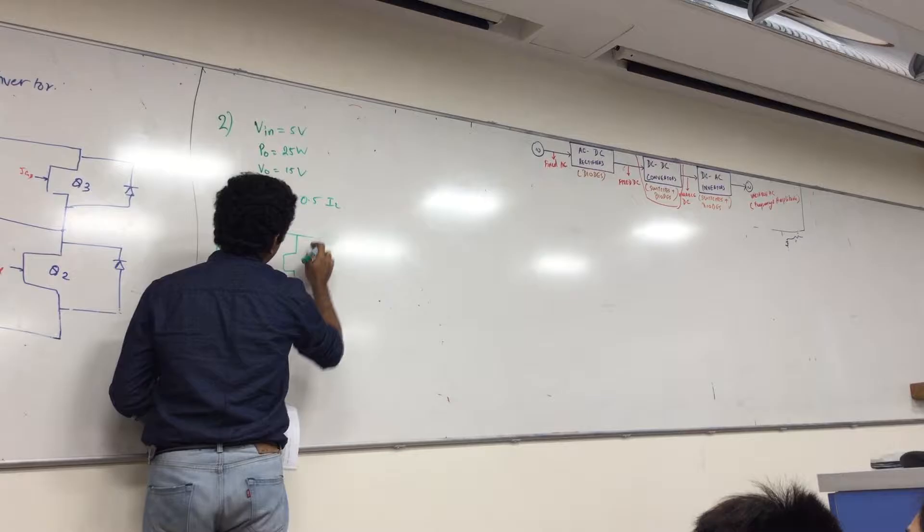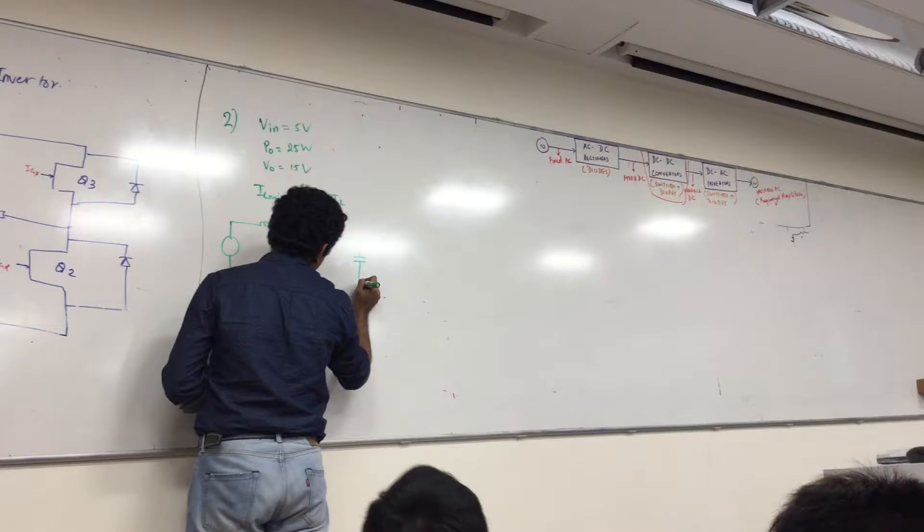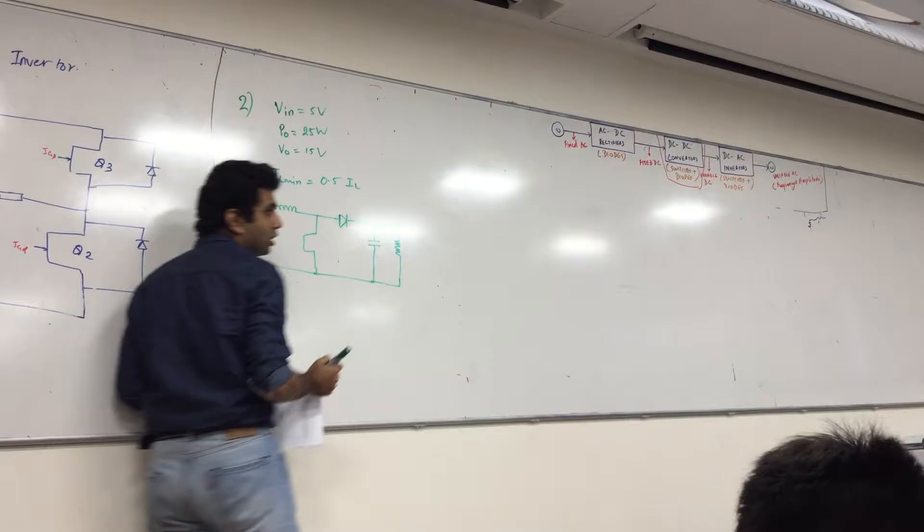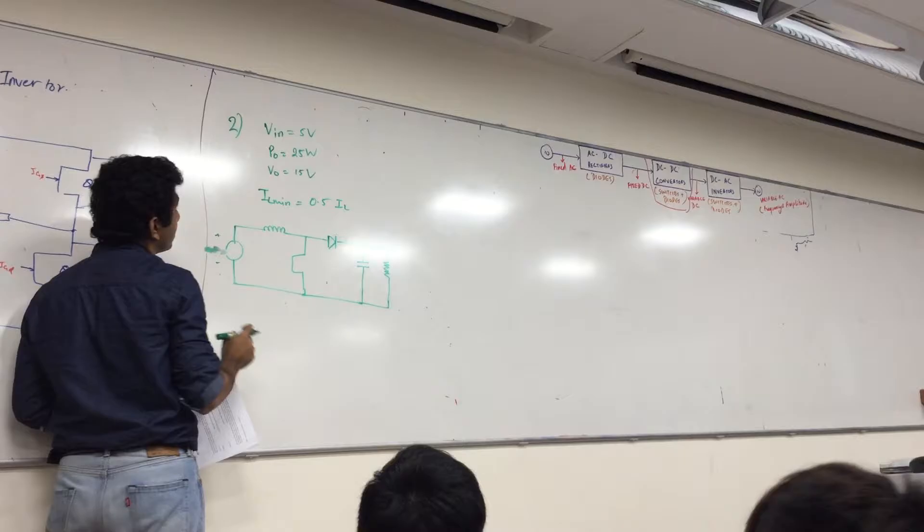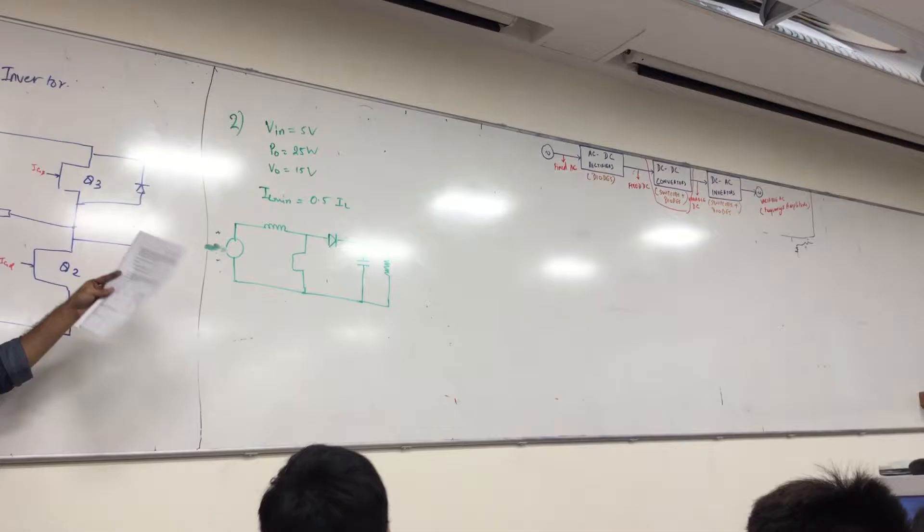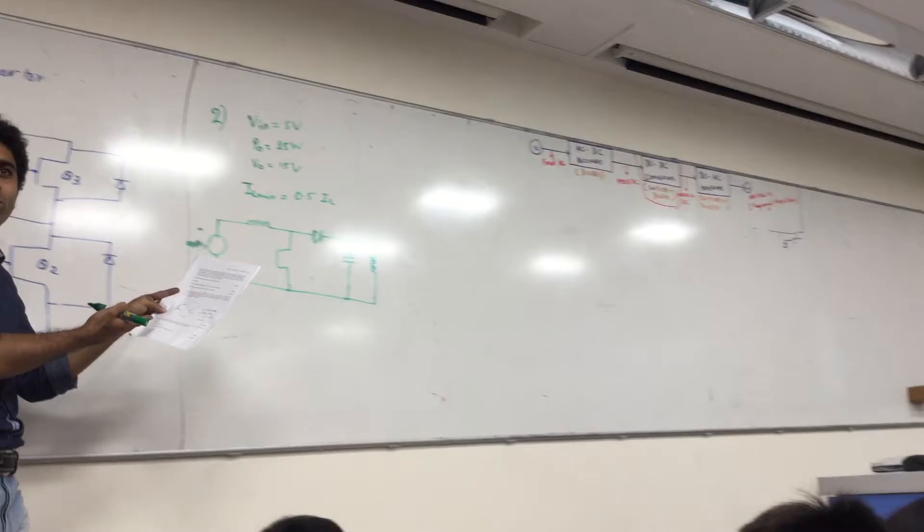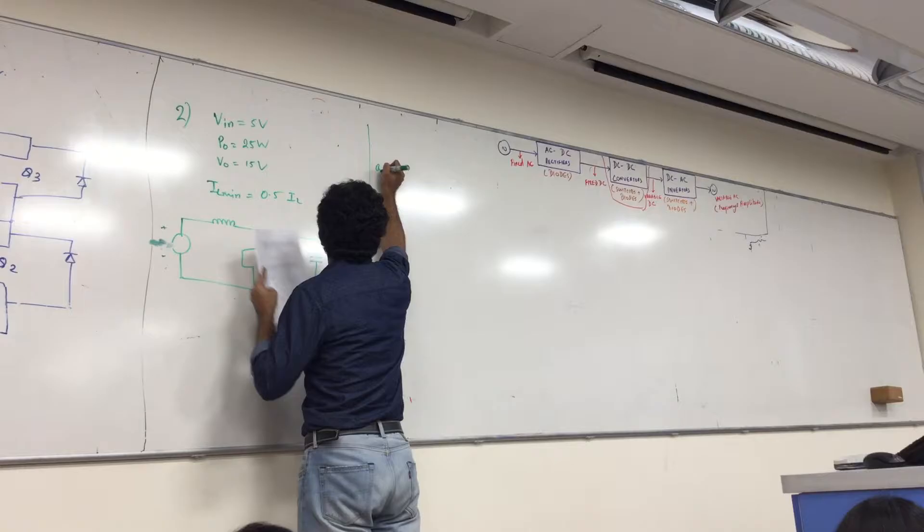Boost Converter, right? Ok. So in this case, I am given Vin is 5 volts, VO is 15 volts. First thing what we do is find out D. The easiest thing, you know, the short shot 5 marks we will get here.